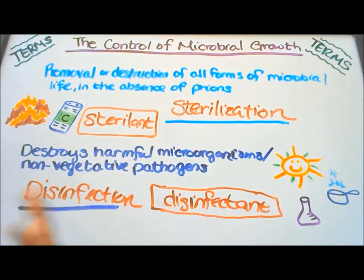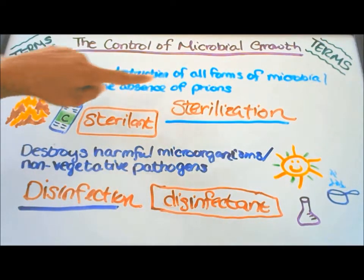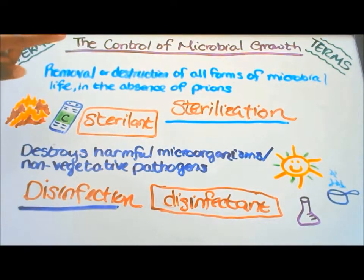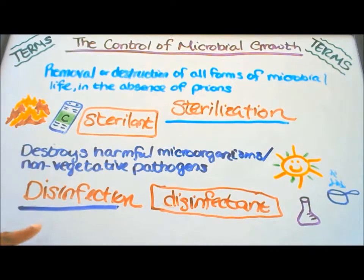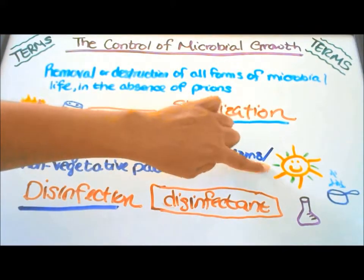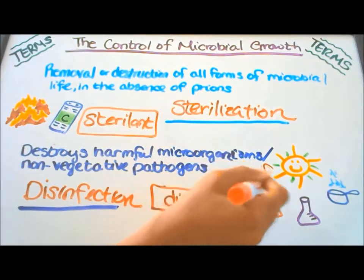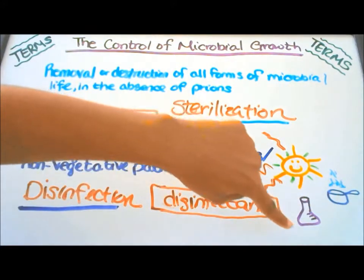Here I have pictures to help you remember what sterilization and disinfection mean. Sterilization is the removal or destruction of all forms of microbial life — it uses heat to kill microbes, such as in commercial sterilization of canned foods. Disinfection destroys harmful microorganisms and non-vegetative pathogens using UV rays, boiling water, and chemicals.